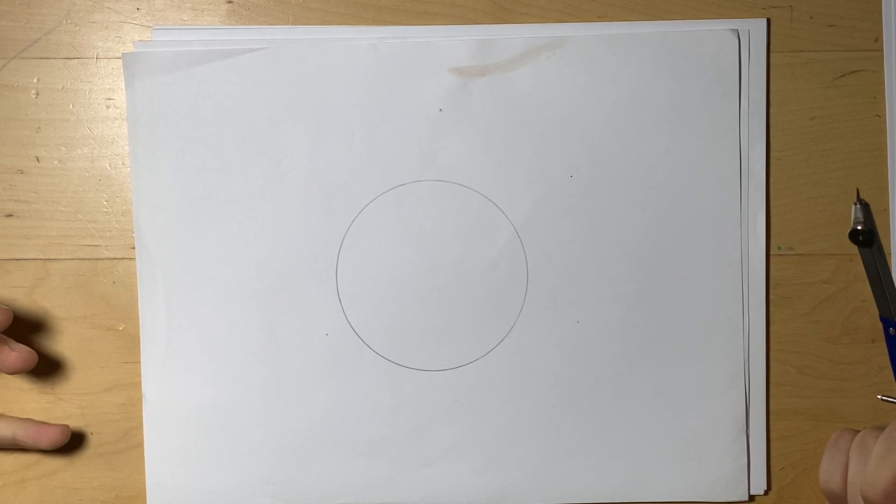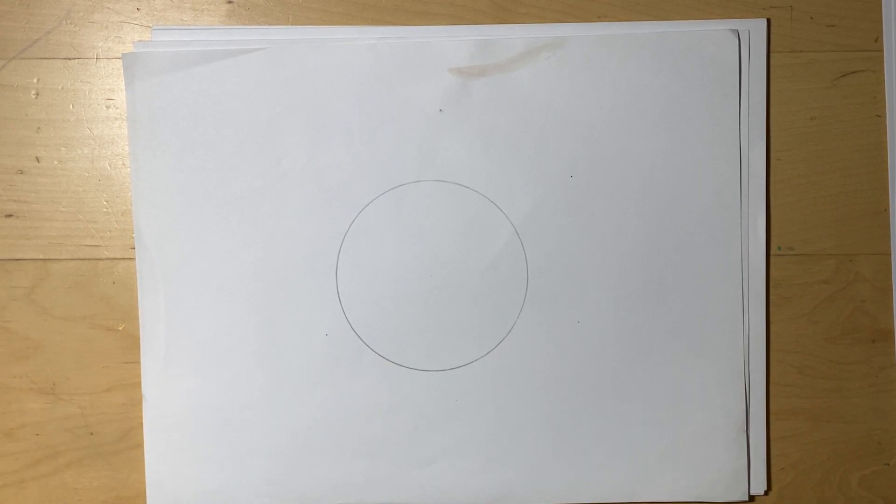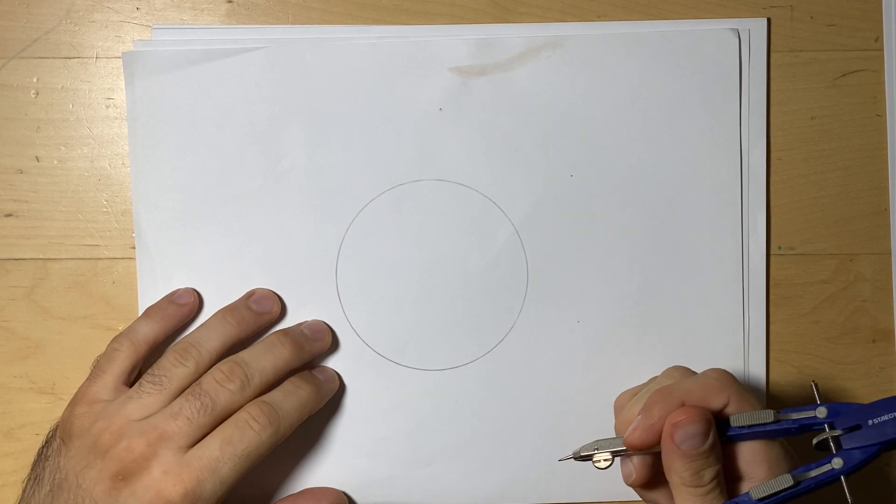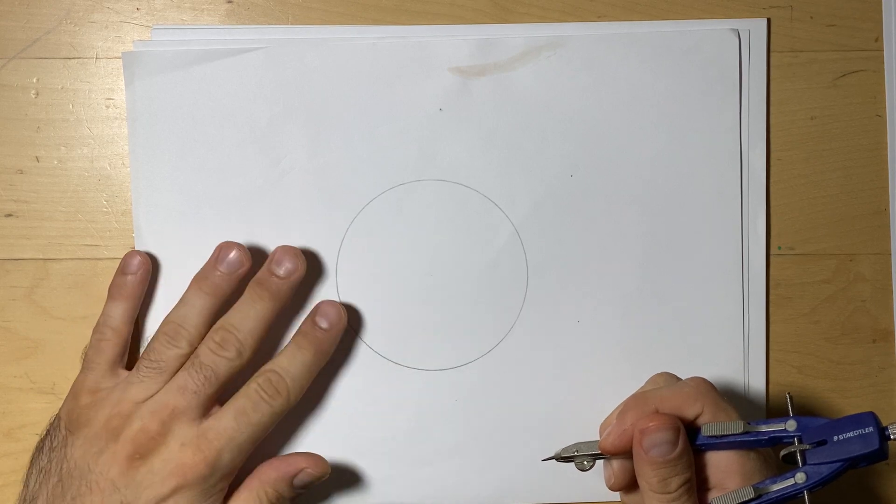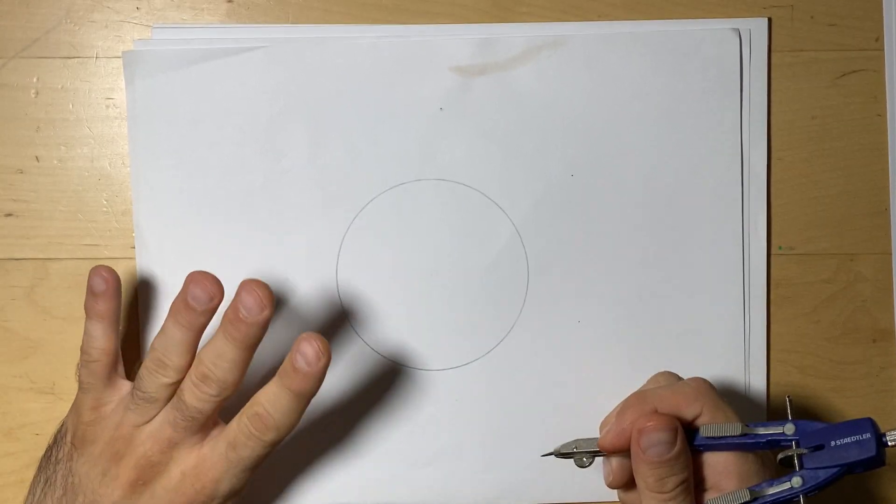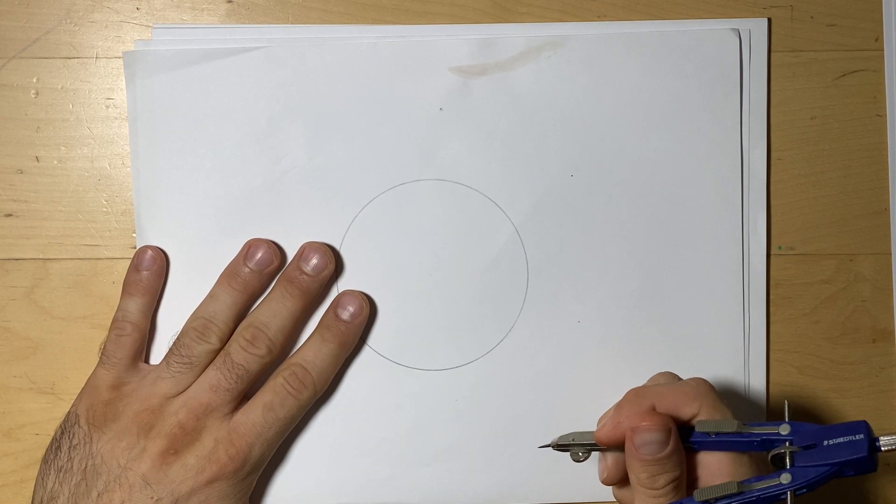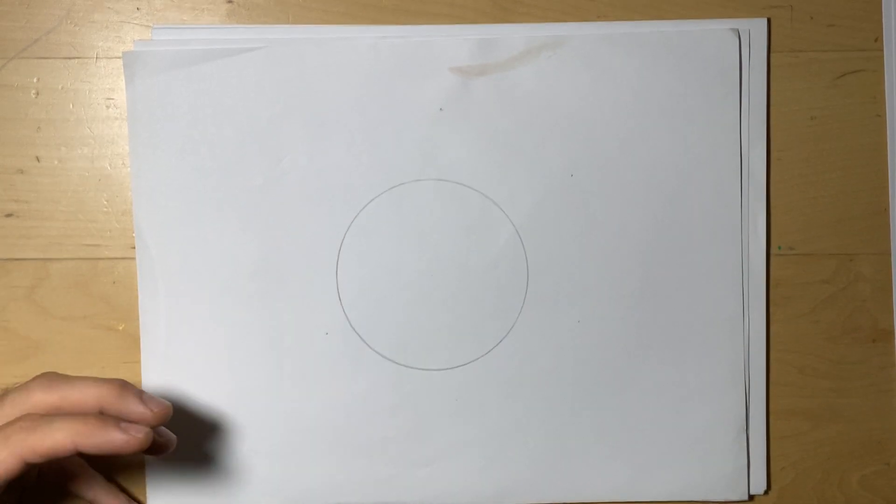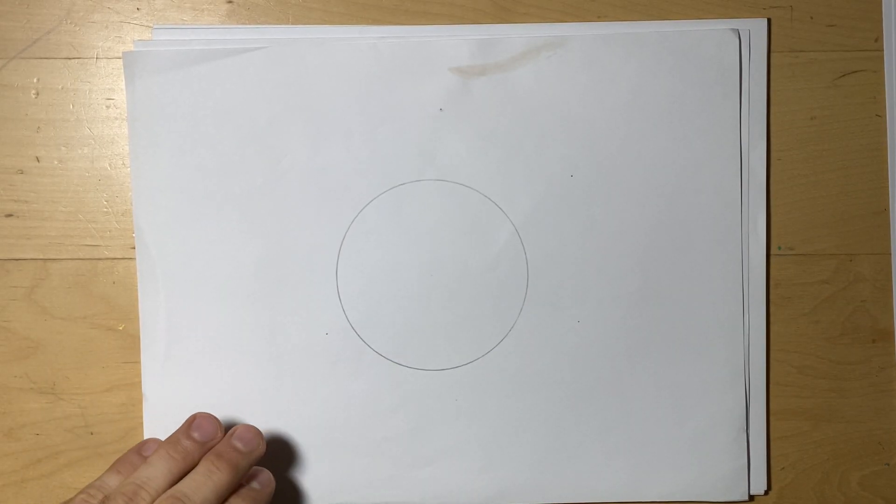At one time, I remember them talking about in history class how important the invention of the wheel was. But I believe more important than the wheel itself is the circle. Once we were taught or figured out how to draw a perfect circle, we can now give life. Give life to what? Well, give life to a lot of other things.